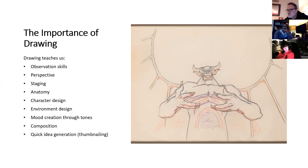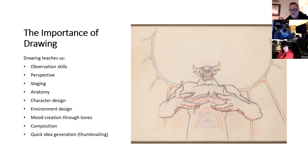Staging, anatomy — if you draw from life you will just start to know anatomy. Your drawings will improve because you'll start to include things like proper shoulder and hip width, and you don't necessarily analytically think about it — it just happens by osmosis. Practice is the best thing you can do. Character design, environment design, using tones to create mood, composition for telling a story and leading the eye around an image, manipulating the viewer, and thumbnailing for quick idea suggestions — these are all the values of drawing, and I really, really strongly recommend it.